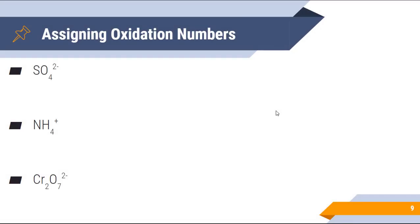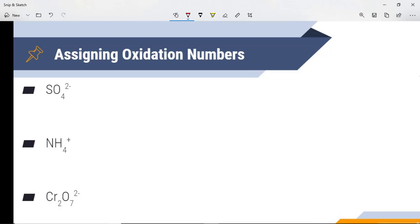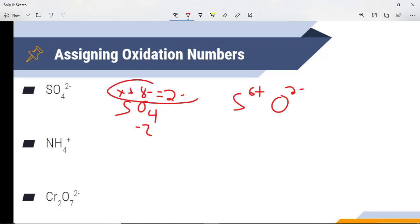Let's do some practice with the shortcut method. We've got a sulfate ion, SO4 with a minus two charge. We don't know S, but we do know oxygen is minus two. With four oxygens, we have a total charge of 8 minus on the oxygen. So if S is unknown, call it x, and x plus negative eight equals negative two, then the charge on S has to be 6 plus. It just ends up becoming a math problem — the total sum of the oxidation numbers has to equal the charge of the entire molecule.